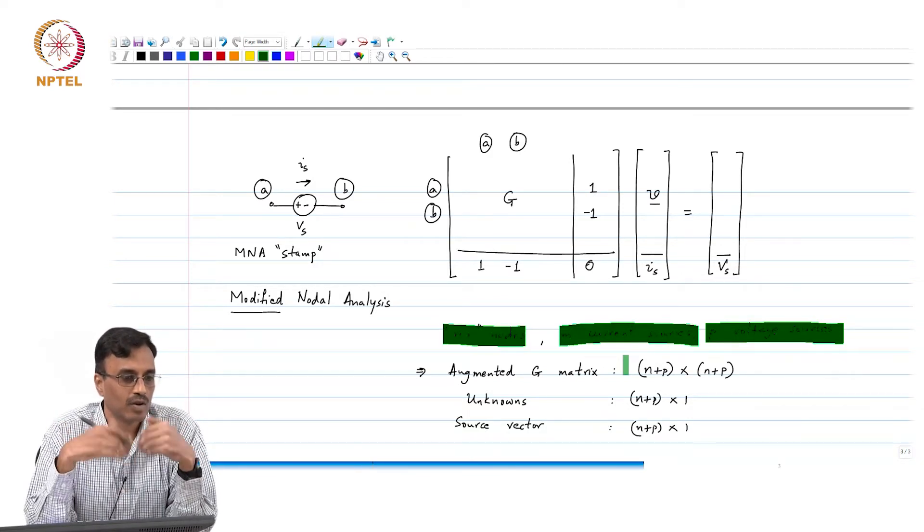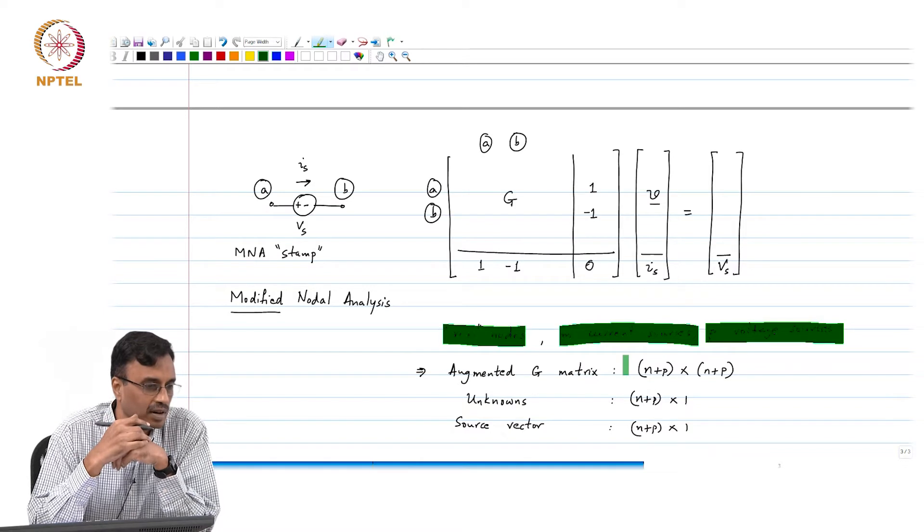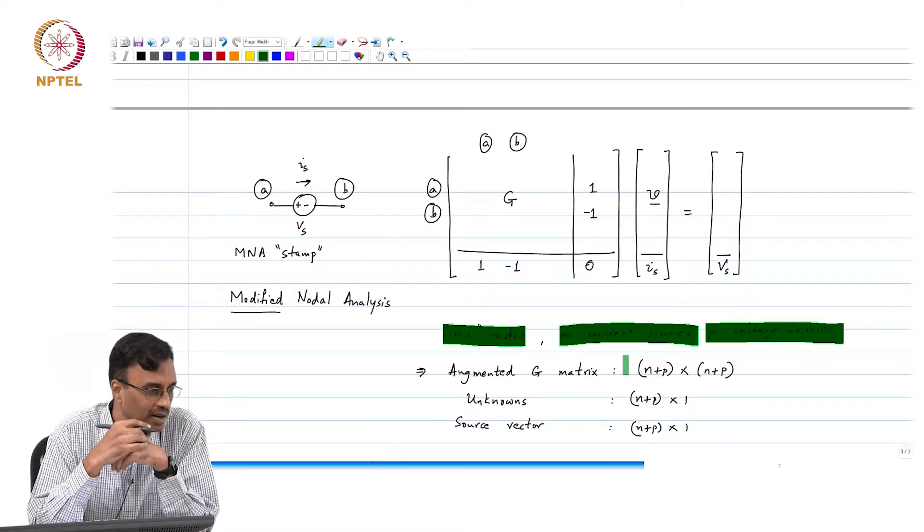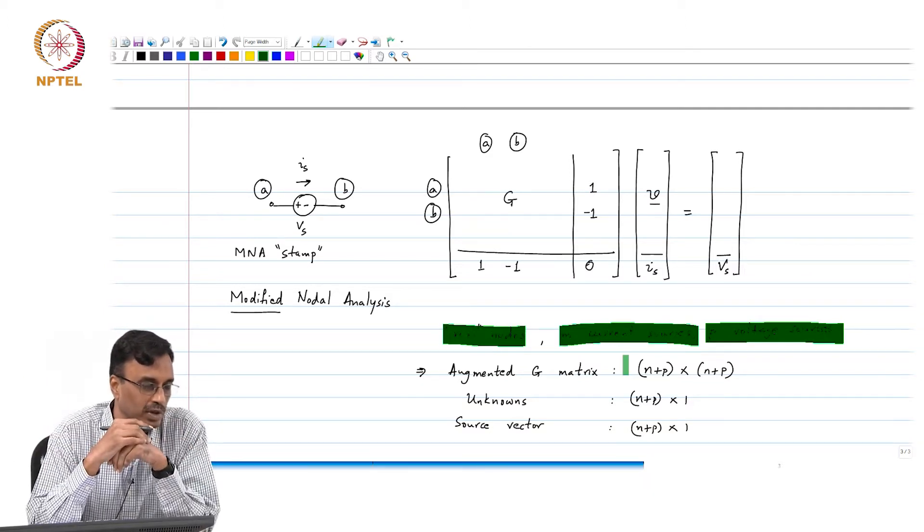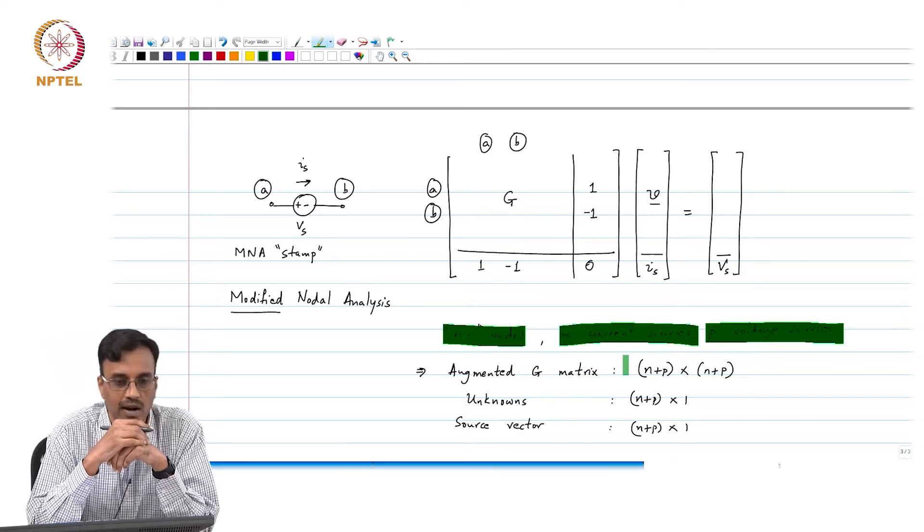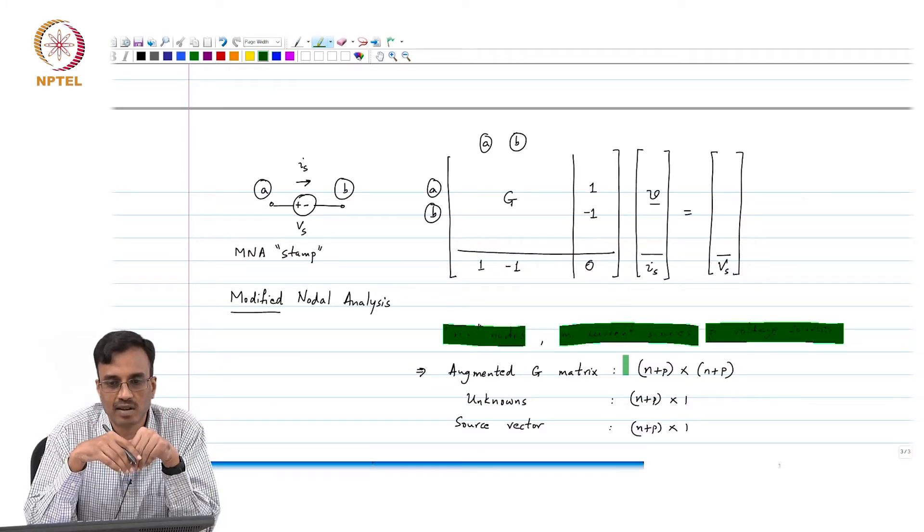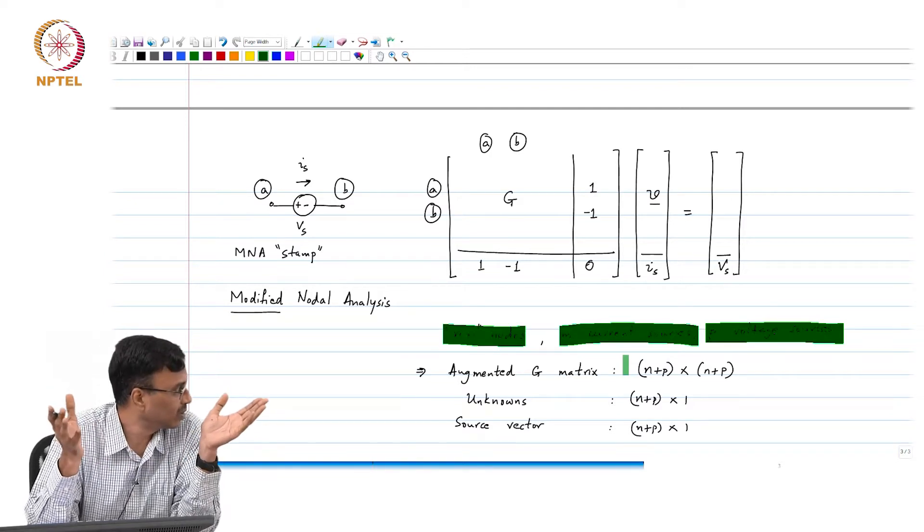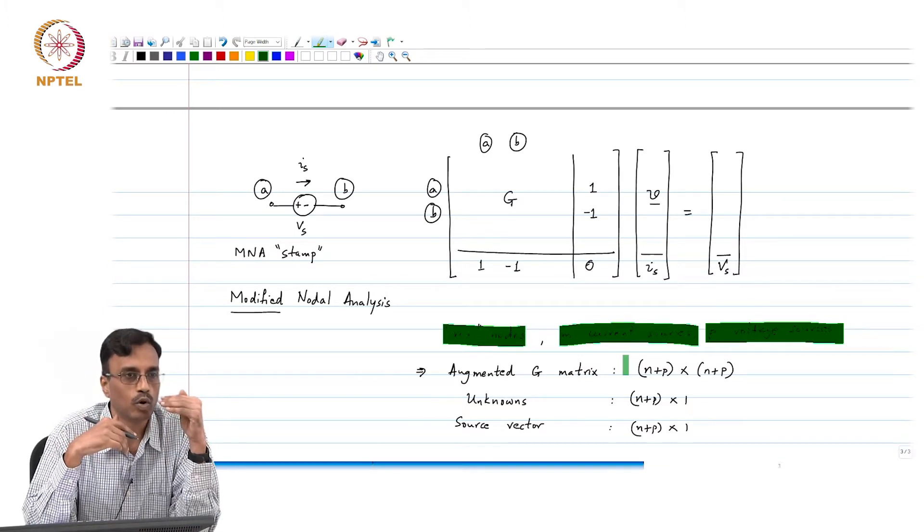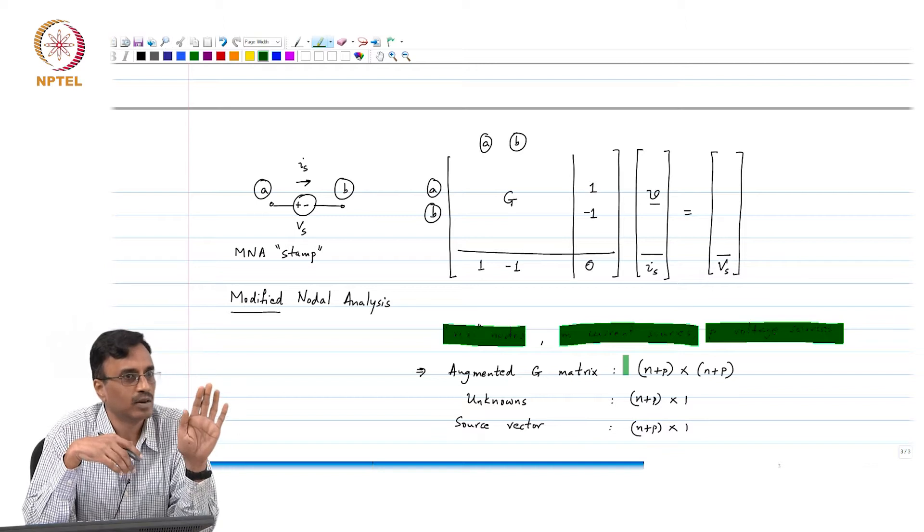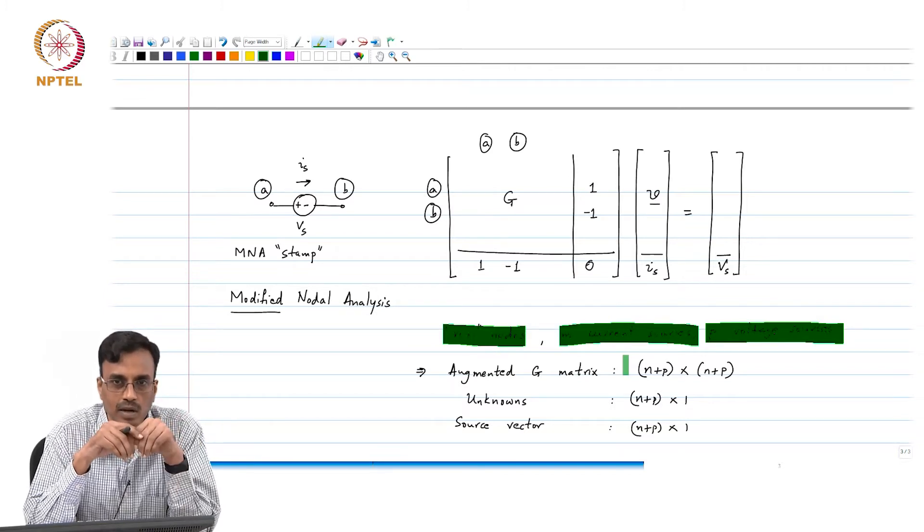This is of course a simple minded way of doing this. If you have a huge network, you do not want to create so much allocation. You do not want to allocate so much memory at one time. Then you can probably do smarter things - that is a different ball game. It is all about memory management and so on. But at least in principle you go element by element and then add to the existing all zero augmented conductance matrix, the stamp of that particular element.